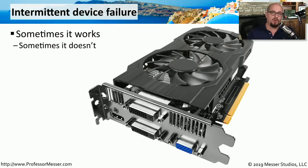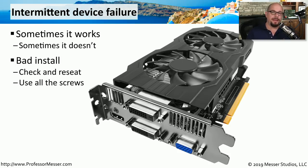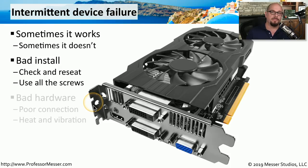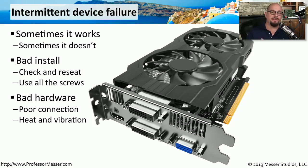Sometimes you may find that your computer is working perfectly normally, but intermittently you might have problems with one particular component — sometimes the system is working, and other times it isn't, and it seems to be random when these particular problems are happening. Sometimes this is related to a bad adapter card installation, so you may want to check the adapter cards and perhaps reseat them inside of those adapter slots. Also make sure that all of your adapter cards are screwed down so they're not going to move once they've been installed. This can be caused by the vibrations occurring constantly with the fans blowing through your system, and of course, heat inside of your system may be causing these problems as well. You may be able to tighten the connectors, or you may have to replace the hardware to solve these intermittent problems.